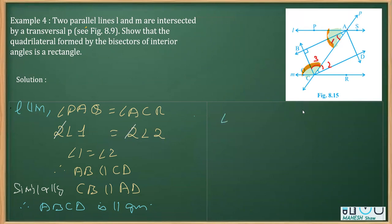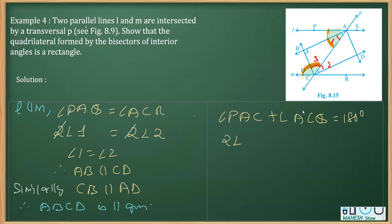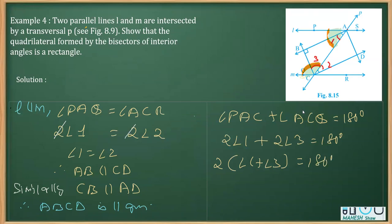So we can write: angle PAC plus angle ACQ equals 180 degrees. Reason: co-interior angles. Now replacing angle PAC with twice angle 1, since it is a bisector, and replacing angle ACQ with twice angle 3, we get 2(angle 1 + angle 3) = 180 degrees. Taking 2 as common and transposing, angle 1 plus angle 3 equals 90 degrees.